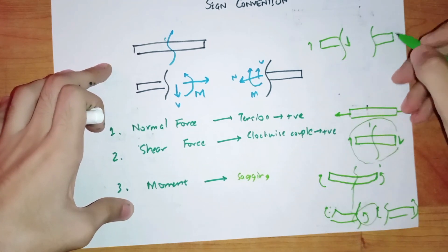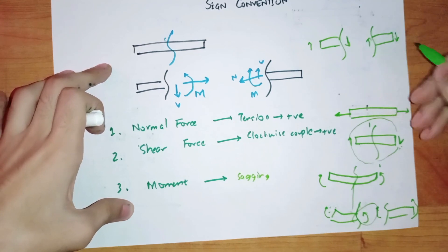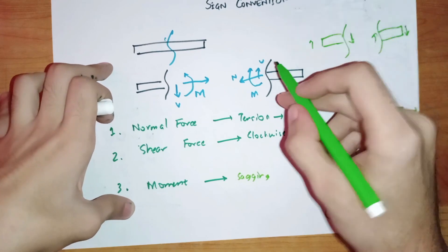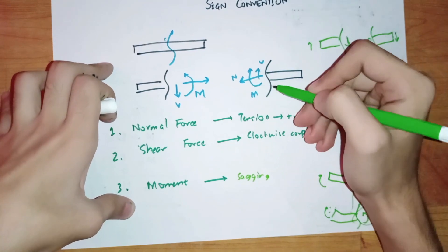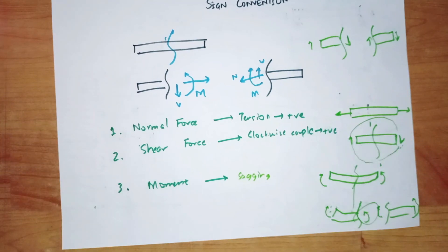And the same goes for the right first segment: if the shear force is acting downward on one side, it must act in the upward direction on the right segment. So this is how we use sign convention when solving for internal forces. I hope everything was clear, and if you have any issues regarding it, please do comment below. Thank you for watching the video.